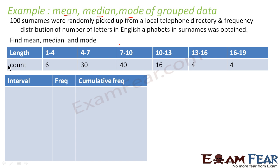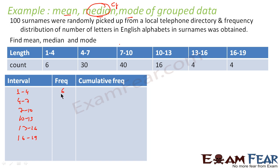For median, we need cumulative frequency. The class intervals are: 1–4, 4–7, 7–10, 10–13, 13–16, and 16–19. The frequencies are 6, 30, 40, 16, 4, and 4. The cumulative frequencies are: 6, 36, 76, 92, 96, and 100.